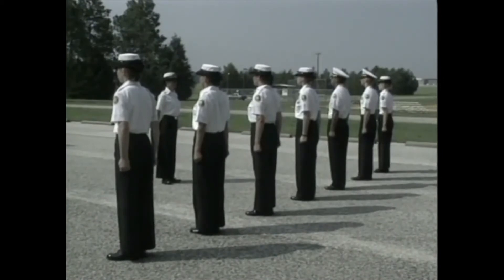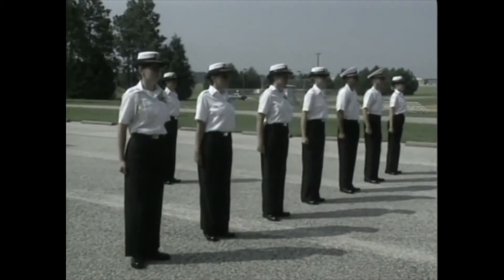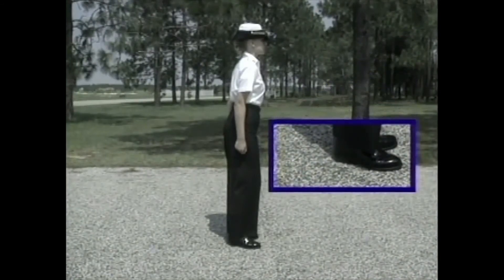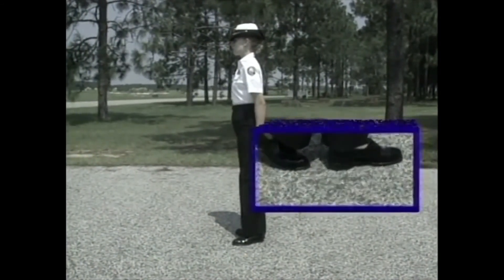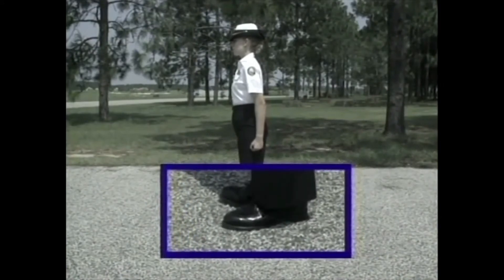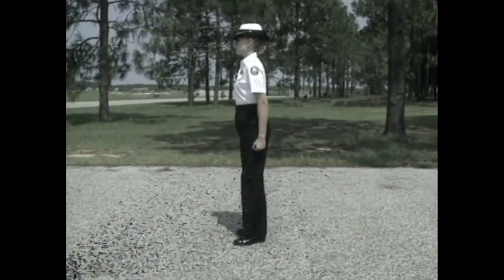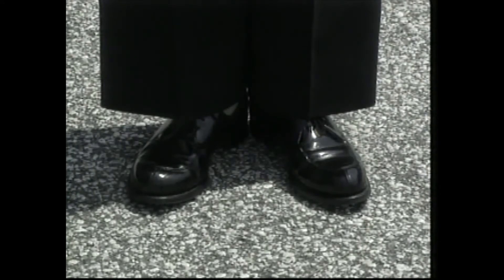About face is also a two-count movement. At the preparatory command 'about,' shift your weight to the left leg without any noticeable movement. At the command of execution, on count one, move your right toe half a foot length behind and slightly to the right of your left heel. Do not change the position of your left foot and keep most of your weight on your left heel. On count two, keeping your arms and hands at the position of attention, turn 180 degrees to the right. The turn is made on the heel of the left foot and the ball of the right foot. If your right toe was properly placed on count one, your feet will be at a 45-degree angle with heels touching when you complete the turn.